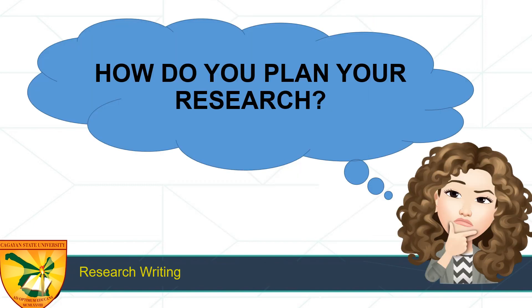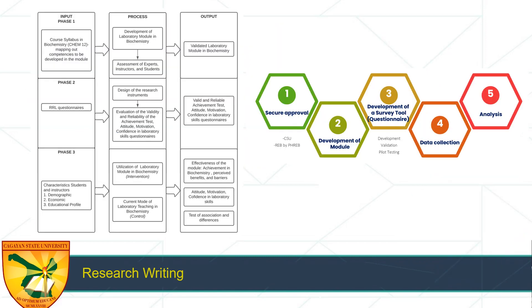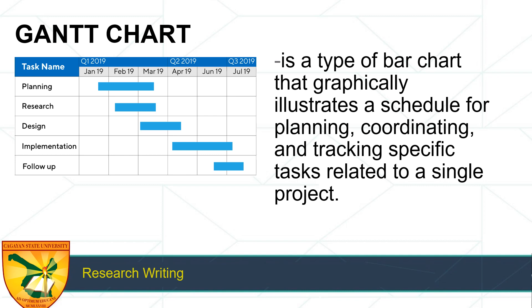So how do you plan your research? After you're done with chapters 1, 2, and 3, what's next? You need to go back to your conceptual framework and data gathering procedure. The activities and the flow are all there; what you just need to add is when you will do it. That's when this tool comes in — our Gantt chart. The Gantt chart is a type of bar chart that graphically illustrates a schedule for planning, coordinating, and tracking specific tasks related to a single project.